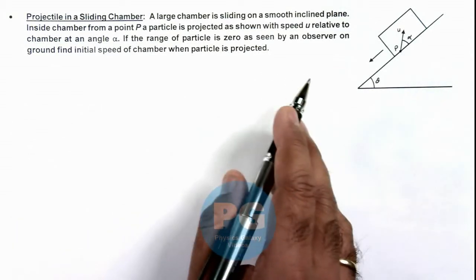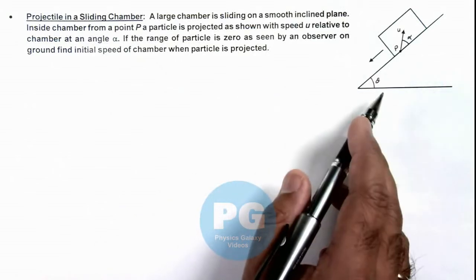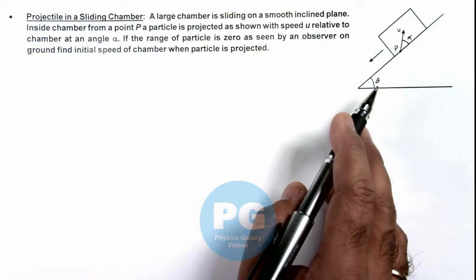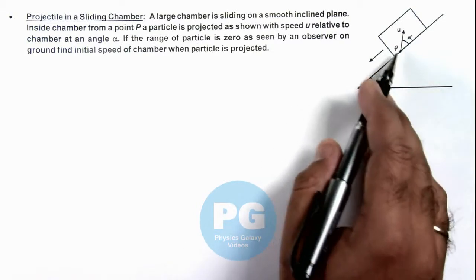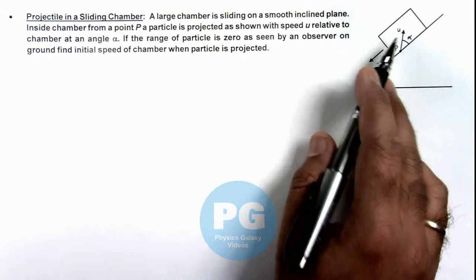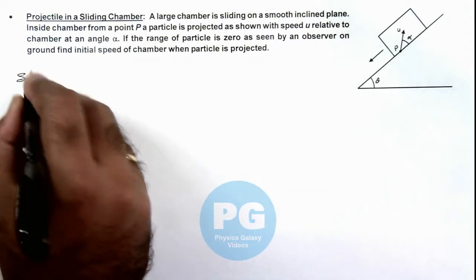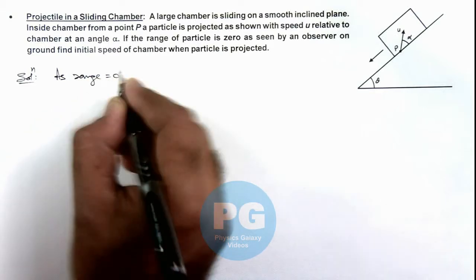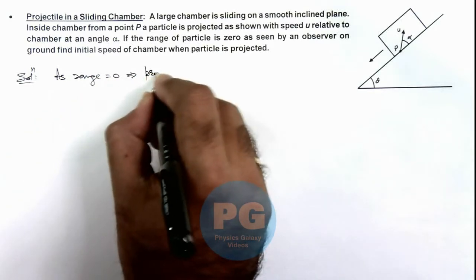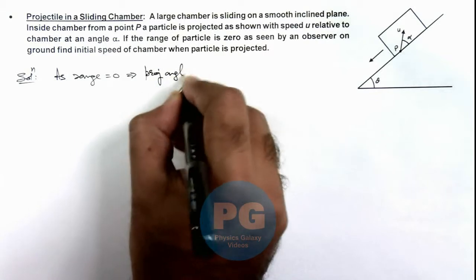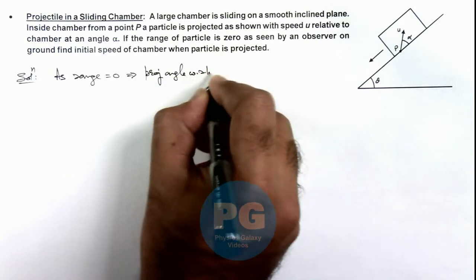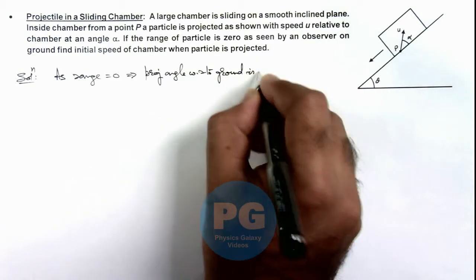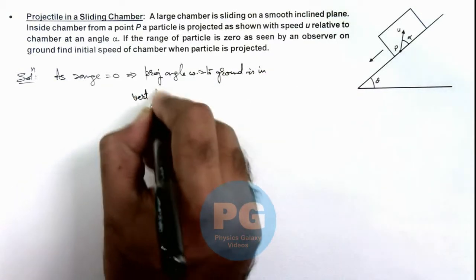Here we can see from ground, or with respect to ground, the range will be zero only if the observer on ground will see that the particle is projected vertically up. So here in this situation we can see, as range of projectile is zero, this implies the projection angle with respect to ground is in the vertical direction.